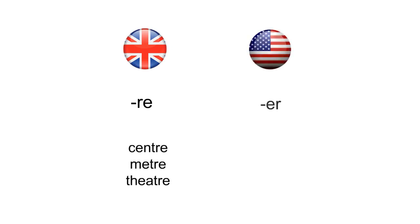Spelling. Words ending in -re in British English, like centre, metre, and theatre, become -er in American English: center, meter, and theater.